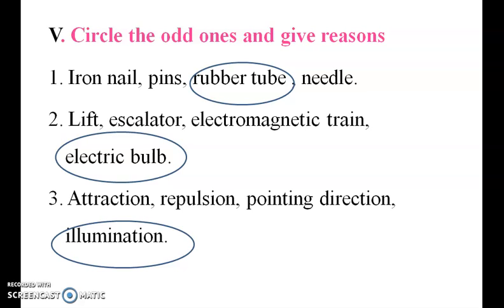Next set: lift, escalator, electromagnetic train, and electric bulb. Electric bulb is the odd one, because lift, escalator, and magnetic train are all based on magnets, but electric bulb is not. Another set: attraction, repulsion, pointing direction, and illumination. Attraction, repulsion, and pointing direction are properties of a magnet, but illumination is not.